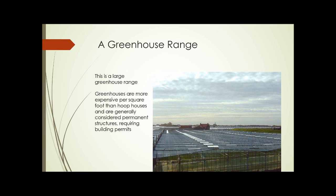This is a photograph of a very large greenhouse range. Greenhouses are more expensive per square foot to build than hoop houses and are generally considered permanent structures, so they require building permits and are subject to certain regulations that hoop houses may not be. However, the plastic covering doesn't have to be replaced every year or two, since they're typically covered with glass or a higher-quality polycarbonate type of plastic. So there are trade-offs either way, but any sort of growing suitable for a hoop house could be done in a greenhouse as well.